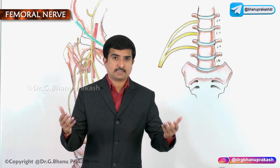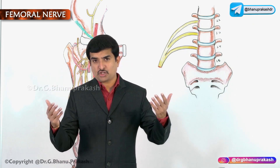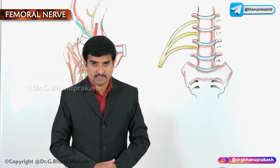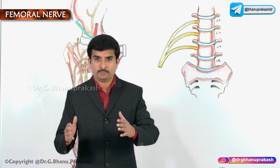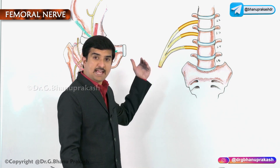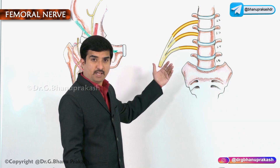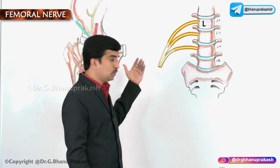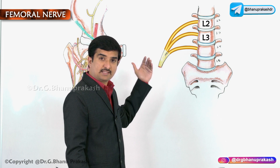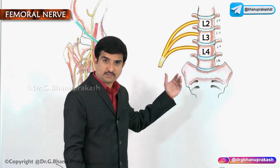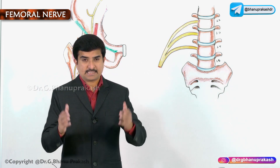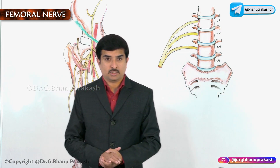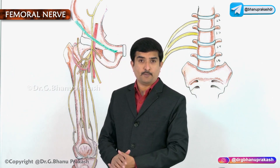Regarding the formation of the femoral nerve, it arises from the dorsal divisions of the anterior rami of L2, L3, and L4 nerves, within the psoas major muscle.